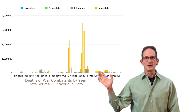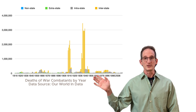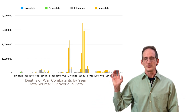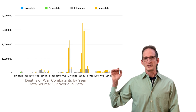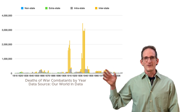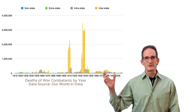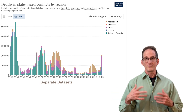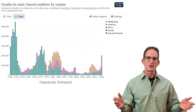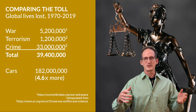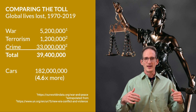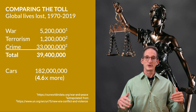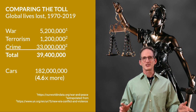Our World in Data has a tally of lives lost in combat in wars. Of course, that's not all of the harms caused by war, but their data set was fairly complete for the whole world, so I used it as my comparison. Going back more than a century, you can see the enormous toll of the First and Second World War, followed by a fairly prolonged period of relative peace. Zooming in on that period, only 5.2 million lives were lost to war over that 50-year period. Taking those numbers and extrapolating the terrorism and crime numbers from the UN report, I can get an estimate of 39 million lives lost to war in that 50-year period. When you compare that to the 182 million lives lost to cars — wow — cars are 4.6 times deadlier.